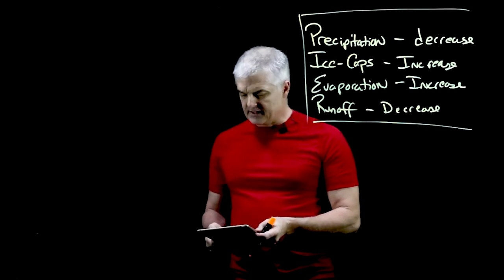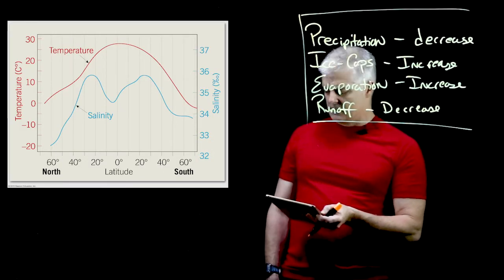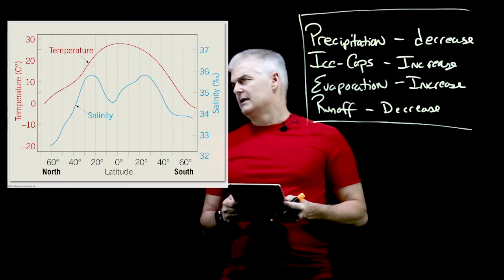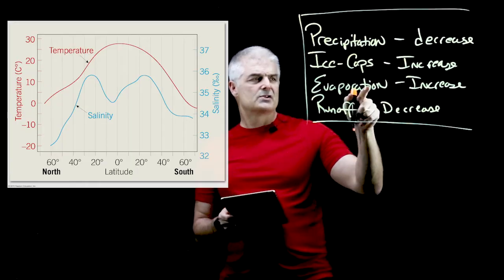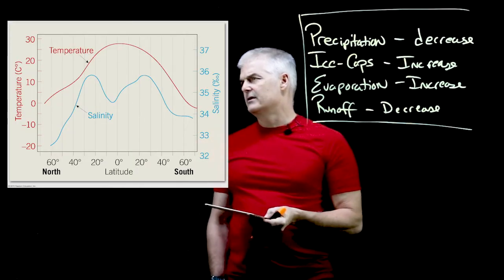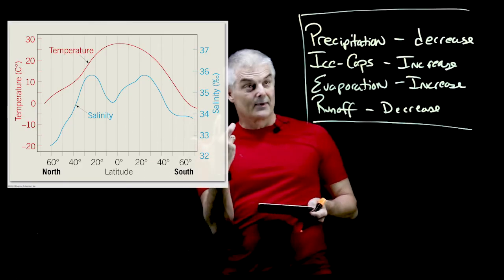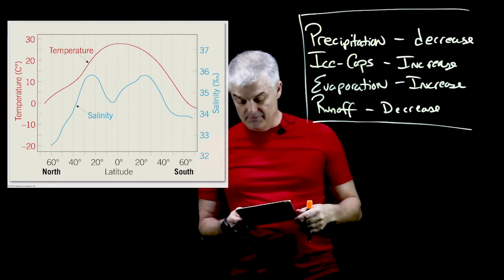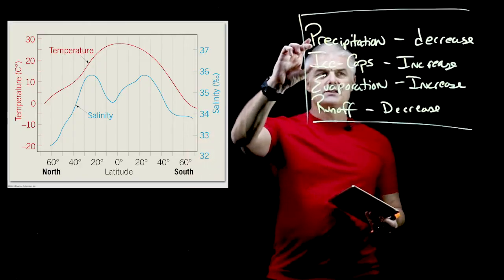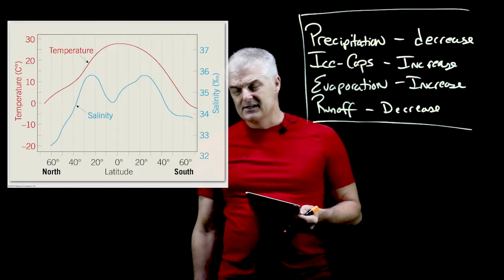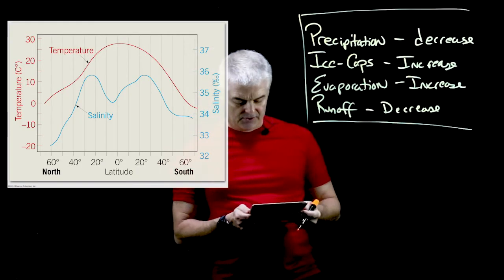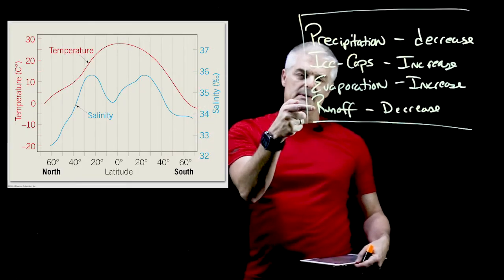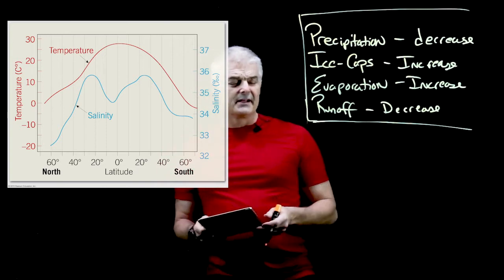Looking at this graph, at high temperatures you'd expect more evaporation and increased salinity. But notice at the equator the salinity is low — because at the equator there's a lot of rain, so precipitation causes it to decrease. Then you see two peaks on either side where you have lots of evaporation. In the polar regions you might ask why it isn't higher — because this is an overall salinity measurement, so the ice cap effect is only localized near the icebergs. And near river mouths you'll get runoff, so salinity can vary very differently.